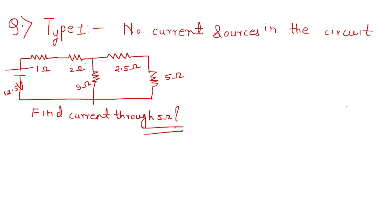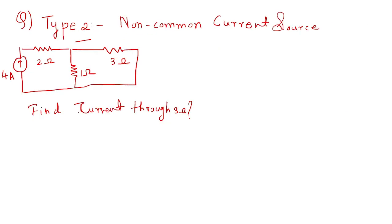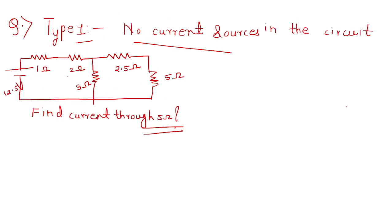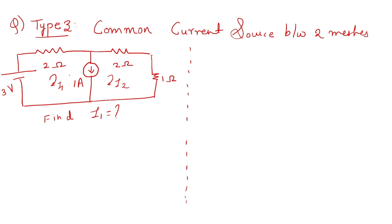Last class we learned about Type 1 and Type 2 problems. In the Type 1 problem, there was no current source in the network. In the Type 2 problem, we had a current source that was not common to both meshes. Today we will be learning a Type 3 problem in mesh analysis, which involves a common current source between two meshes. This is a very popular kind of question in network solving and can be solved via mesh analysis as well as various other techniques.